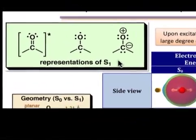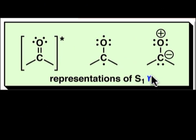Let's continue with the carbonyl example where we saw that the S1 excited state results from the transfer of an electron from a non-bonding level into π star.